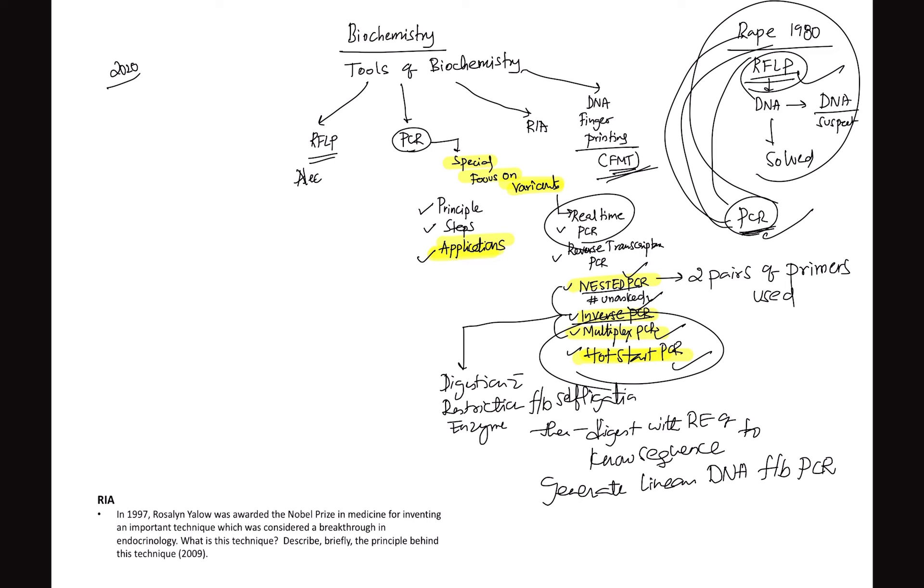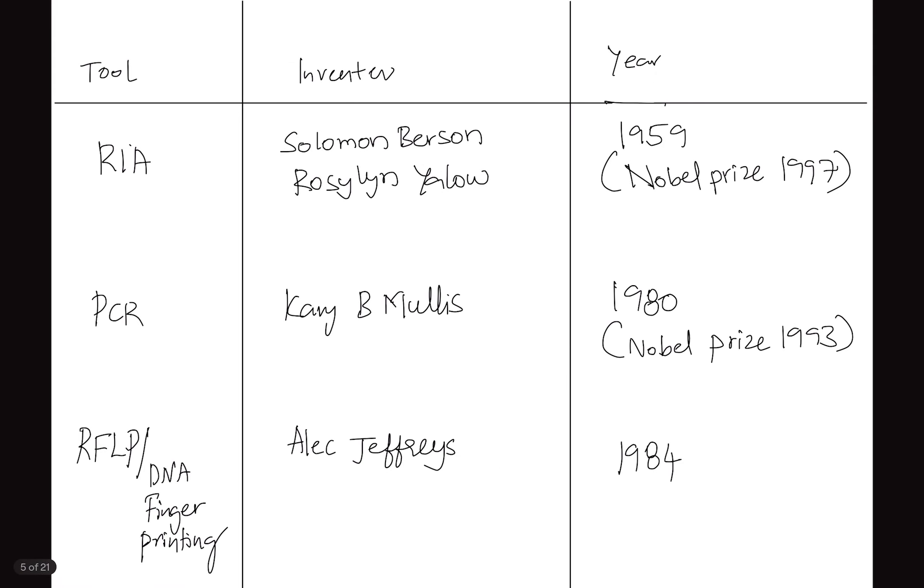When you see nested PCR, instead of using one primer in PCR, we use two pairs of primers. Nested PCR and inverse PCR is a mix of RFLP plus PCR. In inverse PCR, we first use restriction fragment polymorphism, we create a new DNA, spherical or circular DNA, then we apply specific RFLP, then generate a linear DNA followed by PCR. Whatever it is, the first thing is to write introduction to these questions.